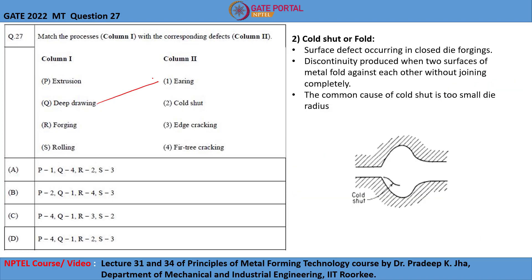The next one is cold shut. Cold shut, also known as fold, is a surface defect occurring in closed die forgings. It is a discontinuity produced on the surface when two surfaces of the metal fold against each other without joining completely. This commonly happens when the die radius is very small.